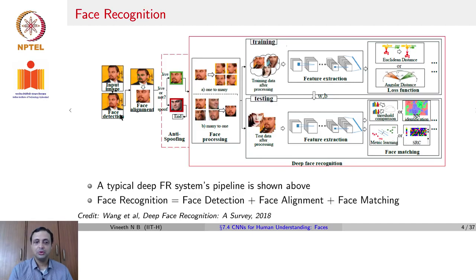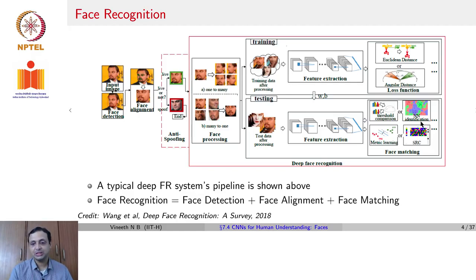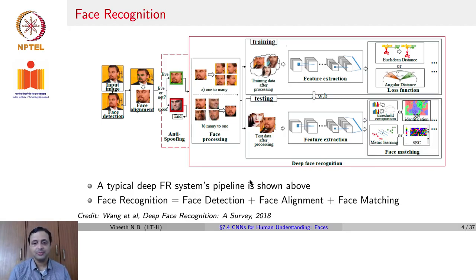At test time, you have a test image which goes through a similar round of processing. Once you have the processed test data, you extract the features and finally match the final embedding of that face using various approaches, such as matching against a threshold, doing nearest neighbor matching, doing metric learning, or sparse representations. Broadly speaking, to deploy face recognition systems in the wild, it is a combination of detection, alignment, and matching — and matching can be of several kinds when we talk about faces.